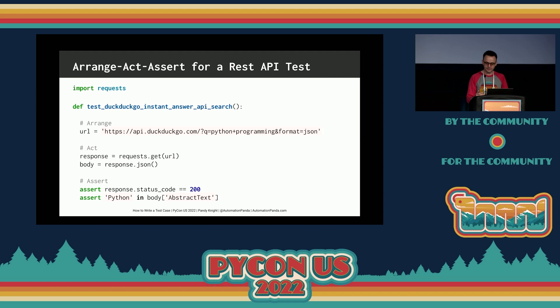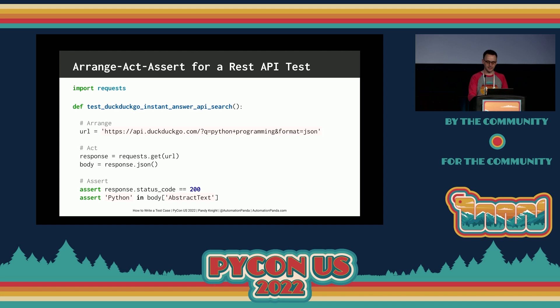Let's kick it up a notch with a more complicated test. This example tests the DuckDuckGo instant answer API using the requests package. The arrange step forms an endpoint URL for searching for Python programming — notice the base URL and the query parameters. The act steps call the API with requests and parse the response body from JSON into a Python dictionary. The assert steps verify the HTTP status code was 200 and that the word 'Python' appears somewhere in the response's abstract text. We can clearly see that the Arrange-Act-Assert pattern works for both unit tests and feature tests.